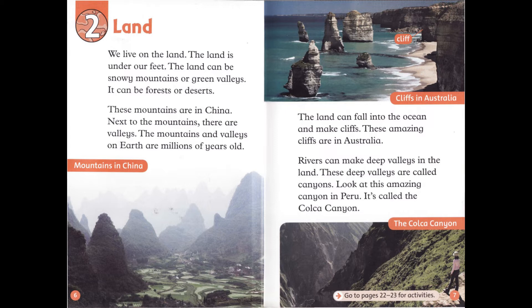The land can fall into the ocean and make cliffs. These amazing cliffs are in Australia. Rivers can make deep valleys in the land. These deep valleys are called canyons. Look at this amazing canyon in Peru. It's called the Colca Canyon.